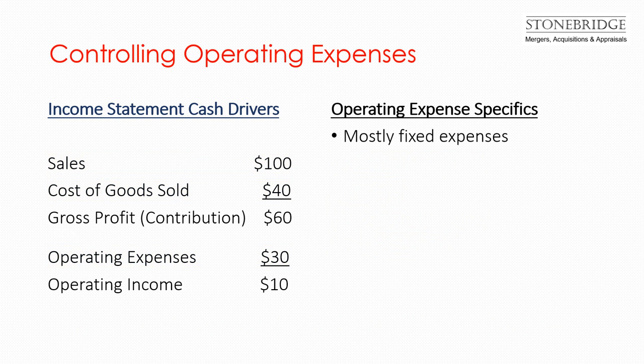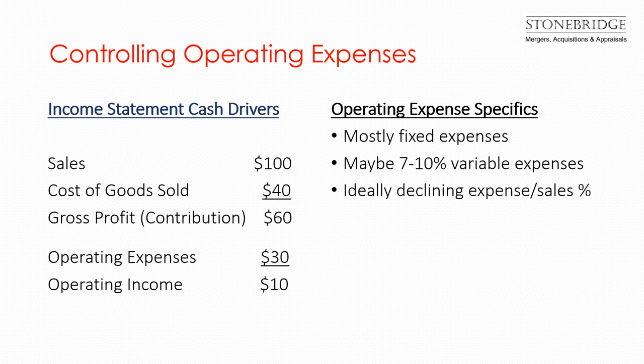Operating expenses are mostly fixed. Fixed expenses are not impacted by sales growth. However, companies tend to have between 7 and 10 percent generally of operating expenses that are variable expenses, which are impacted by sales growth. Ideally, companies want to see the operating expenses as a percentage of sales lag behind the sales growth rate.